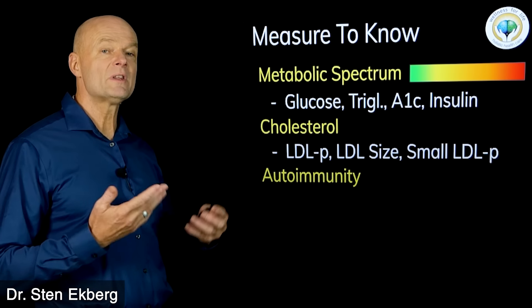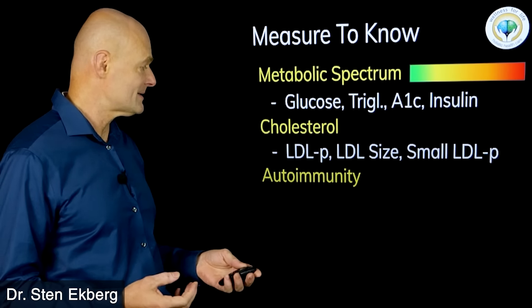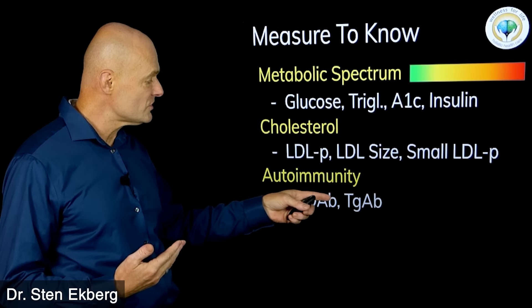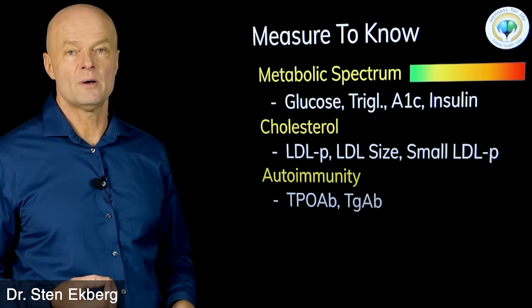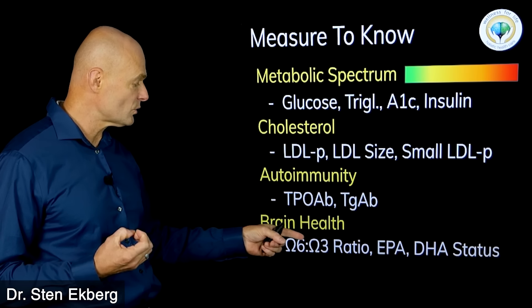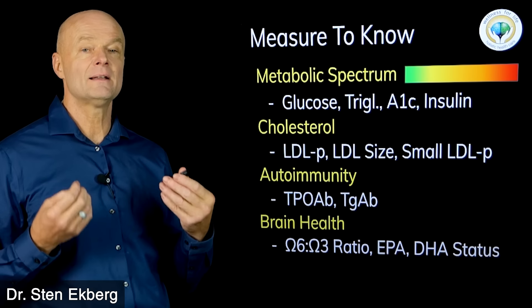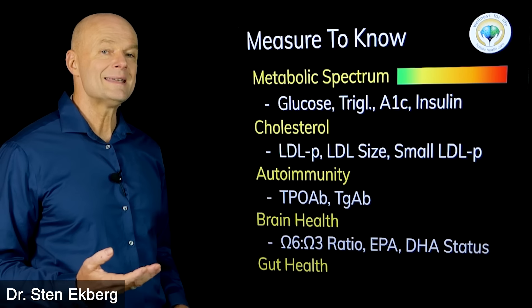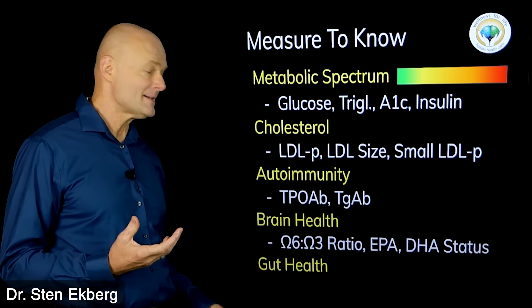We need to understand cholesterol for many different reasons. It is an indirect marker for inflammation and cardiovascular disease, but we need to measure the things that matter. We need to measure your LDL particle count, your LDL particle size, and the number of small LDL particles. Another good idea is to measure something about your autoimmunity because that is becoming so prevalent. You could measure your thyroid peroxidase TPO antibodies and your thyroglobulin antibodies. There are also tests for brain health and cognitive function. You can measure your omega-6 to omega-3 ratios as well as your EPA and DHA status.